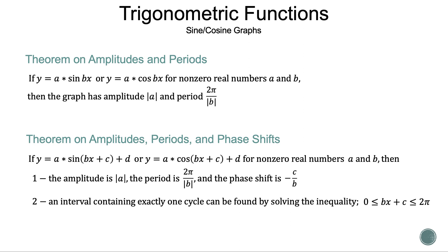The next theorem is the theorem on amplitudes, periods, and phase shifts. If y is equal to a times sine of bx plus c plus d, or y is equal to a times cosine of bx plus c plus d, for non-zero real numbers a and b, then: one, the amplitude is the absolute value of a, the period is 2π over the absolute value of b, and the phase shift is negative c over b. And two, an interval containing exactly one cycle can be found by solving the inequality 0 ≤ bx + c ≤ 2π.